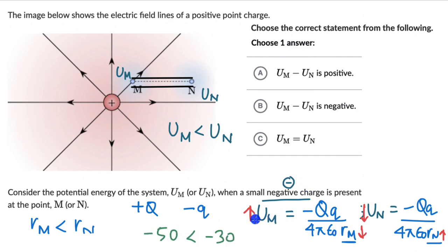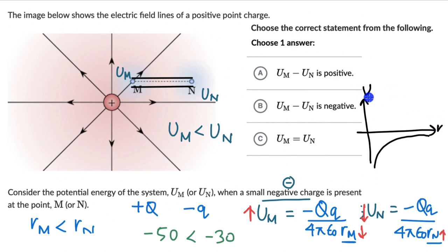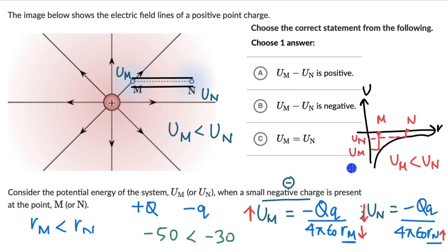We can also draw a potential energy vs. distance graph (U versus r). On this curve, point M is closer in (smaller r) and point N is further out. Reading off the graph, Um corresponds to a more negative value than Un. So even from the U–r graph we confirm that Um is less than Un, meaning Um − Un is negative. The answer is option B. Now let's look at one more question, this one on work done.